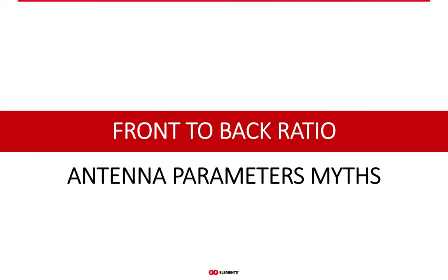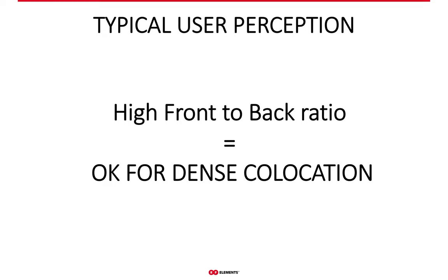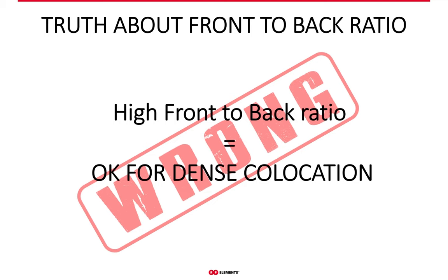To be fair, let's also look at the parameters you may already know. Front-to-back ratio is one of them, and many manufacturers include it in their data sheets. The conventional thinking is that if the front-to-back ratio is high, it means an antenna is good for dense collocation — so if antennas are back-to-back and both have high front-to-back ratio, they will not interfere with each other. The reality is that high front-to-back ratio does not mean an antenna is good for dense collocation in every possible setting. It is simply a misunderstanding.